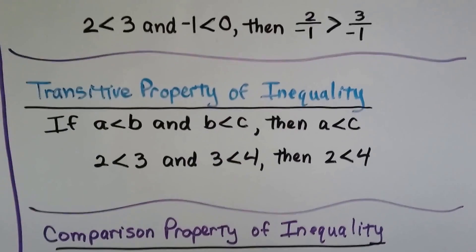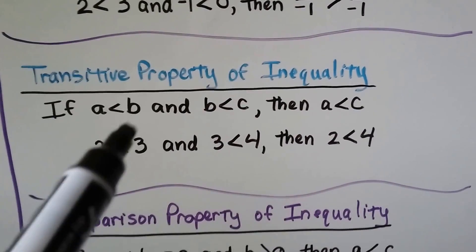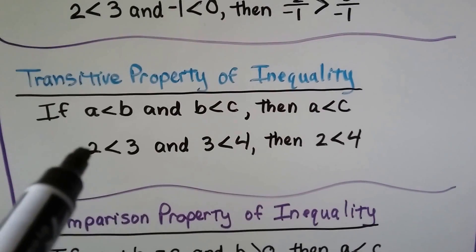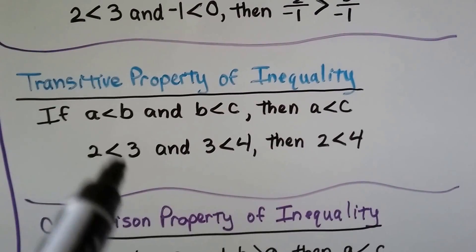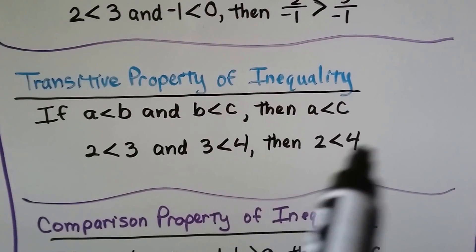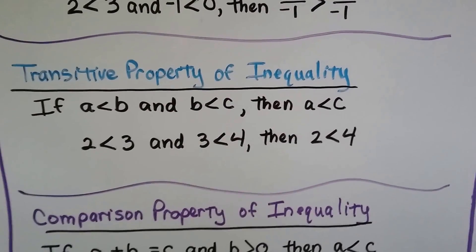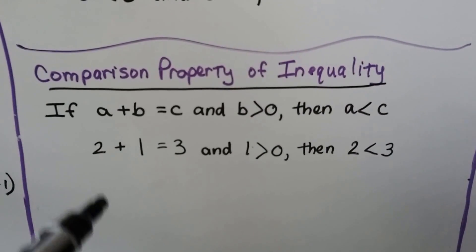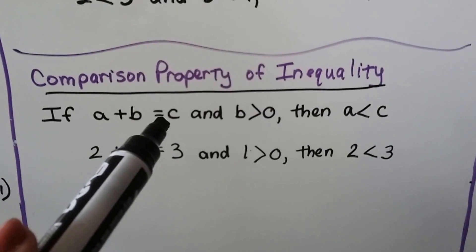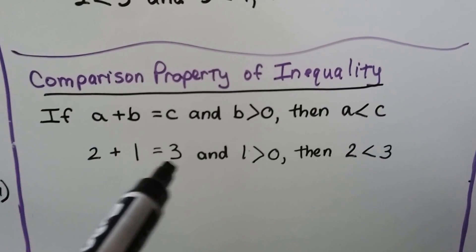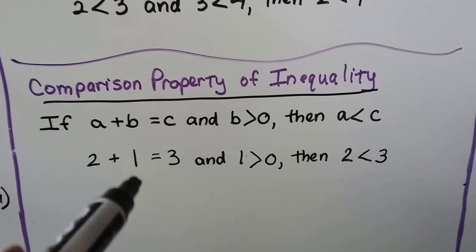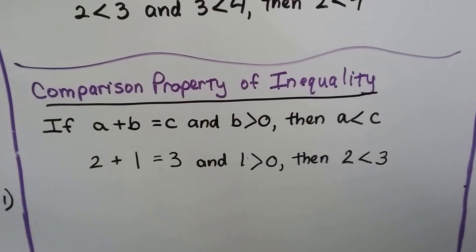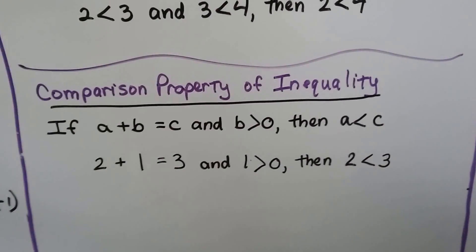The transitive property of inequality: if a is less than b and b is less than c, then a is less than c. With a = 2, b = 3, c = 4: 2 is less than 3, and 3 is less than 4, so 2 is less than 4. The comparison property: if a + b = c — so 2 + 1 = 3 — and b is greater than 0, then a is less than c, so 2 is less than 3.